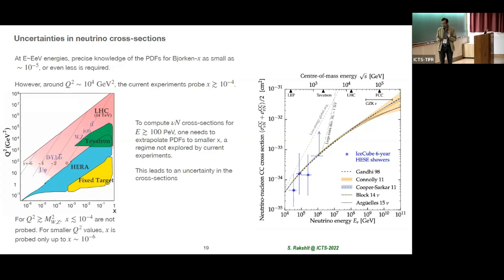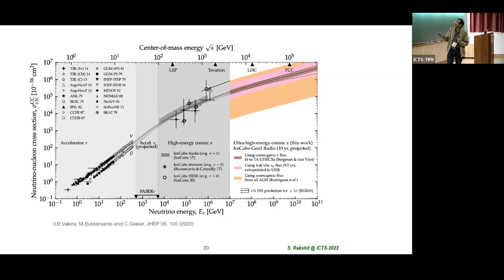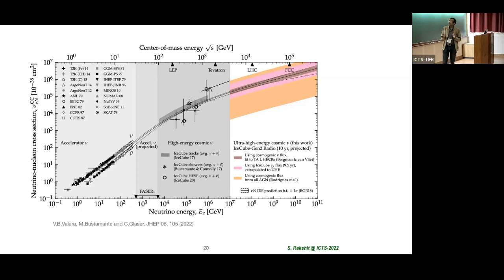IceCube also helps estimate the neutrino-nucleon cross section. You can see the events with their error bars — for tracks one error bar, for showers another, and for high energy events another regime. The neutrino-nucleon cross sections should be known at about 50% at the very highest energies, but we have not yet seen those neutrinos, so right now nothing can be said definitively. In the future, we can measure cross sections that would be accessible even to the FCCs.